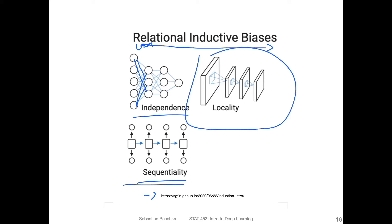For convolutional neural networks, we have this locality assumption — that is what we are going to talk about. Specifically, this is for two-dimensional convolution networks, though you can technically also use one-dimensional convolution networks to analyze text. Here, we are going to focus on the two-dimensional case for simplicity, that is image analysis. Imagine this is our input image, and what the convolution network does is assume that pixels in a certain neighborhood are related to each other.